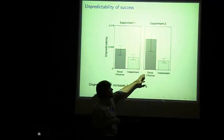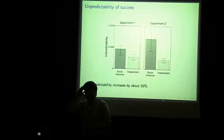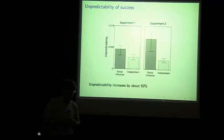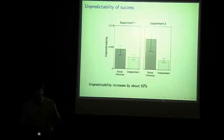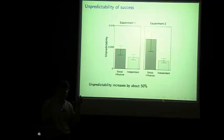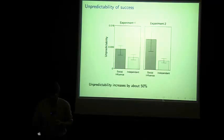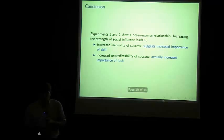So, to make this a little more concrete, we had one song, Lockdown, by the band 52 Metro. In one world, in experiment two, it came in first. In another world, it came in 40th out of 48. It was exactly the same song competing against exactly the same other songs with indistinguishable starting values, with indistinguishable groups of people because we have random assignment.